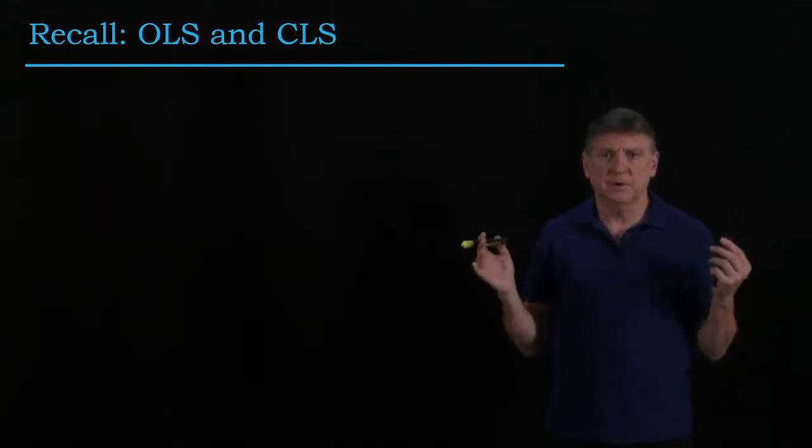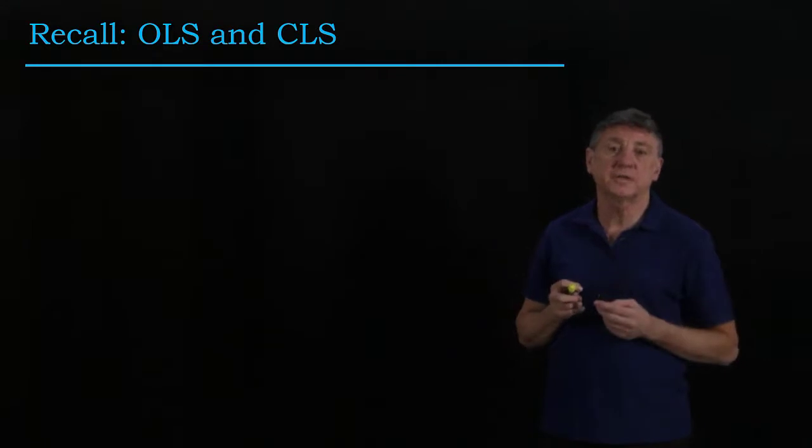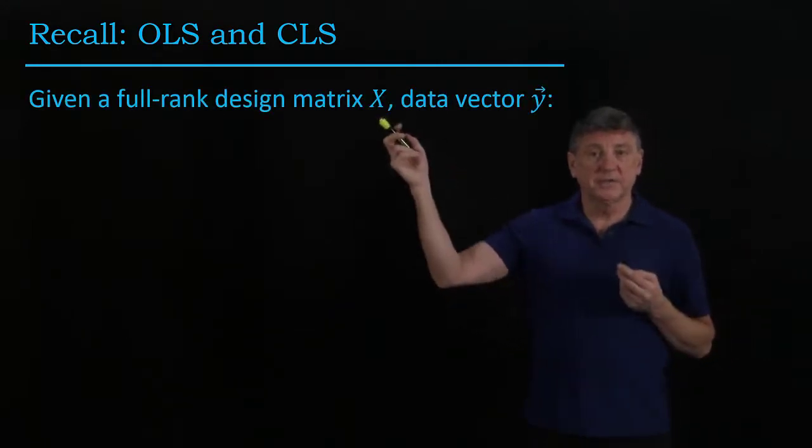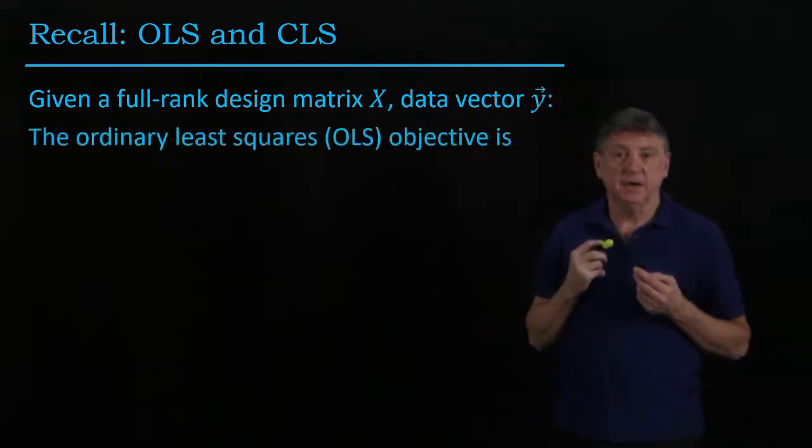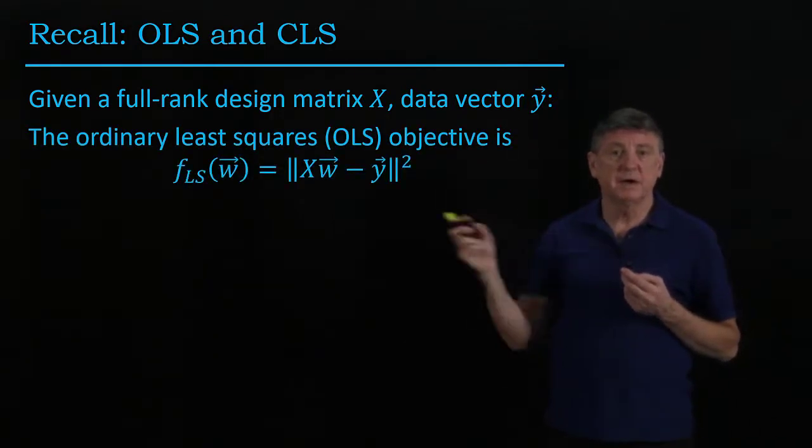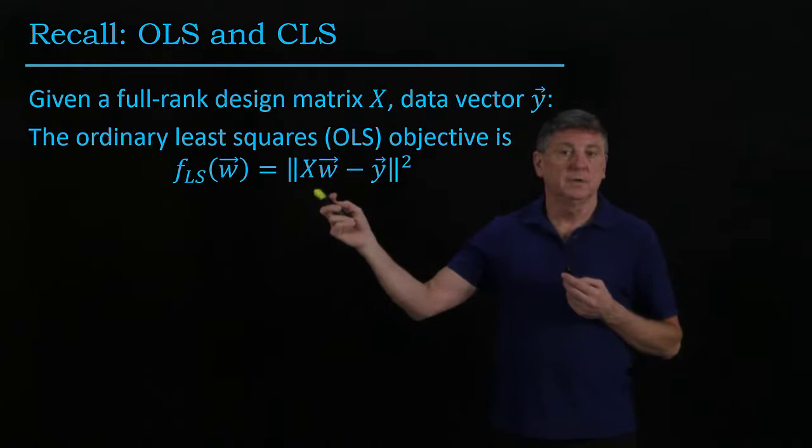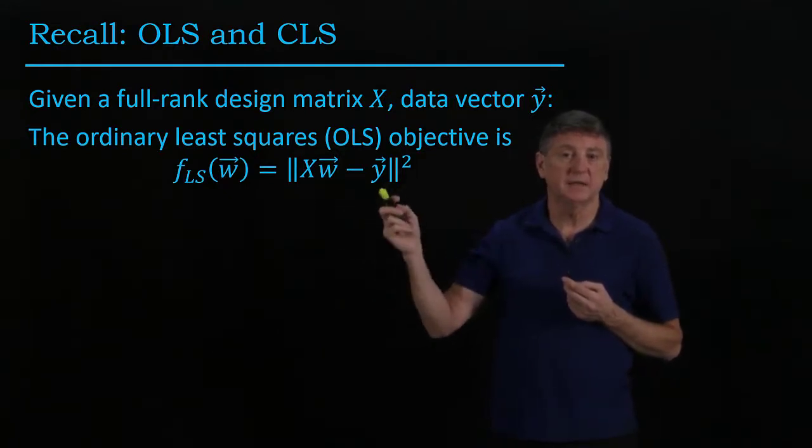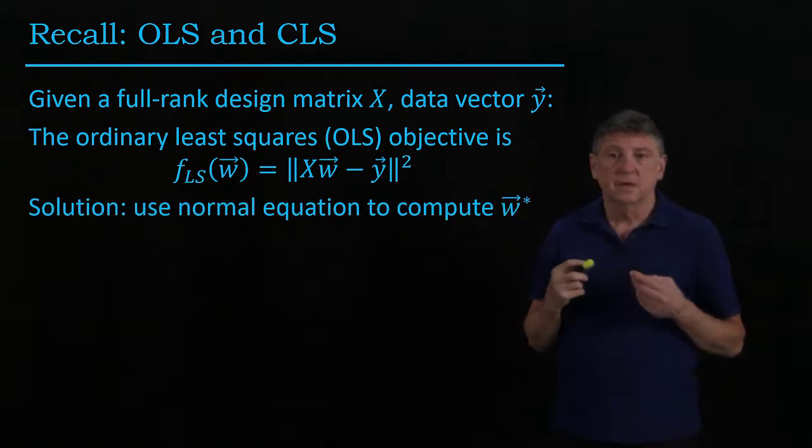So let's start by recalling ordinary least squares and constrained least squares. In ordinary least squares, we're given a design matrix and a data vector, and the problem is to minimize the norm, the squared norm, of the difference between the regression and the dependent values. The solution is we use the normal equation to compute this optimal result.